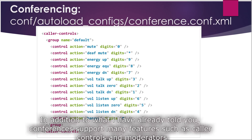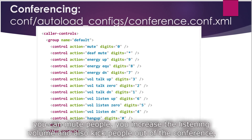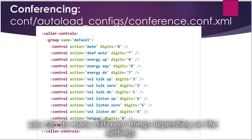In addition to what I've already told you, conferences support many features such as caller controls and moderators. Caller controls allow someone to take control of the conference — you can mute people, increase volume, increase the listening volume, kick people out of the conference, and do different things depending on the settings.